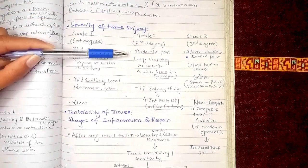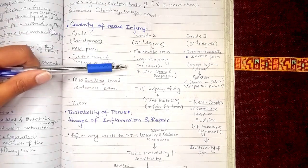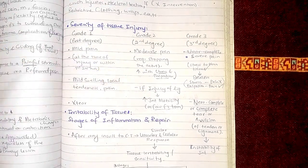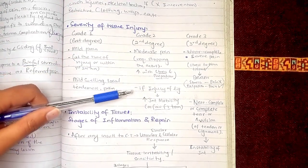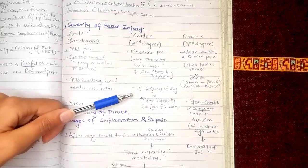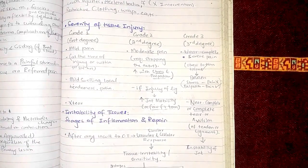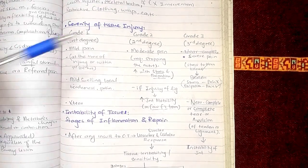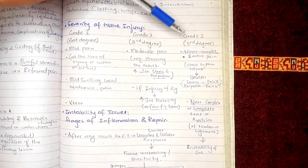In grade two, there is moderate pain at a level that requires stopping of the activity. This pain can increase with stress and palpation. If there is injury of the ligaments, tearing of a few fibers of the ligament would increase joint mobility due to a slight degree of instability of the joint. Key points in grade two are moderate pain and tearing of a few fibers.